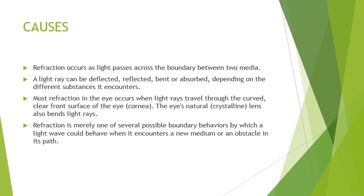The causes. Refraction occurs as light passes across the boundary between two media. A light ray can be deflected, reflected, bent, or absorbed depending on the different substances it encounters. Most refraction occurs when light travels through the curved, clear front surface of the eye — the cornea. The eye's natural crystalline lens also bends light rays. Refraction is merely one of the several possible boundary behaviours by which light behaves when it encounters a new medium or an obstacle in its path.